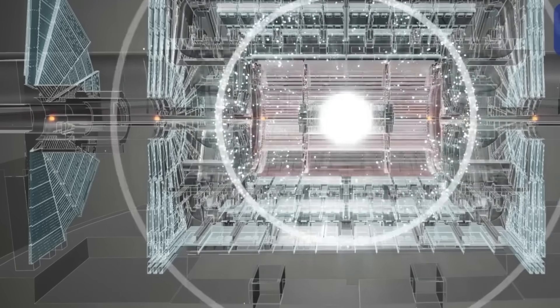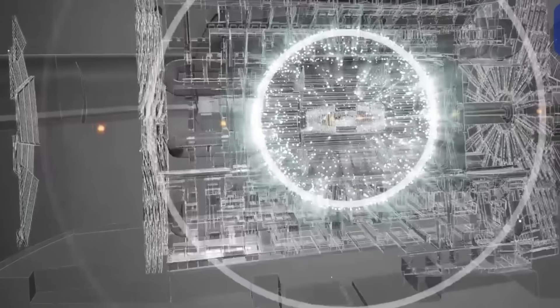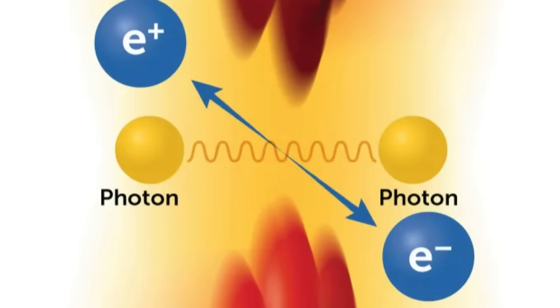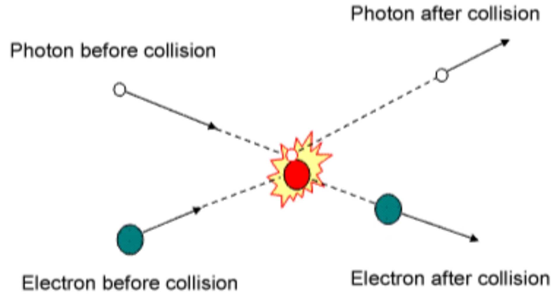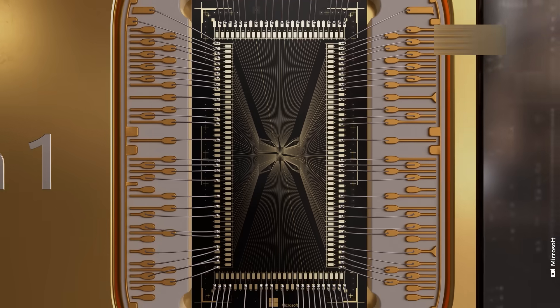Traditionally, Compton Scattering has been observed in high-energy physics experiments, where a photon collides with an electron, resulting in a change in the photon's wavelength and direction. This process is a cornerstone in our understanding of the quantum world and is critical in applications ranging from astrophysics to medical imaging.